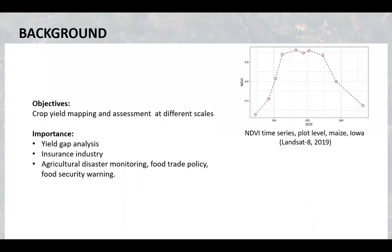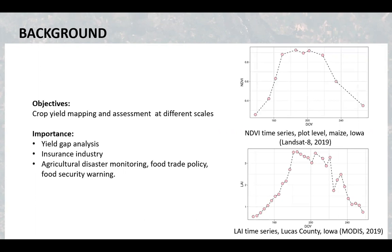For example, we can observe the crop growth at a field level as shown with the NDVI time series based on Landsat. At the same time we can have an aggregate over a county, for example with MODIS vegetation index time series.